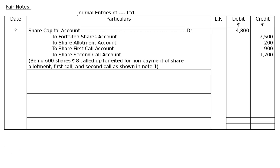Share capital account debited — 600 shares × Rs.8 = Rs.4,800. Share capital account debited Rs.4,800, to forfeited shares account. That is the amount collected on these shares. Mr. A paid Rs.1 on 100 shares — that is 100 × 1 = Rs.100.